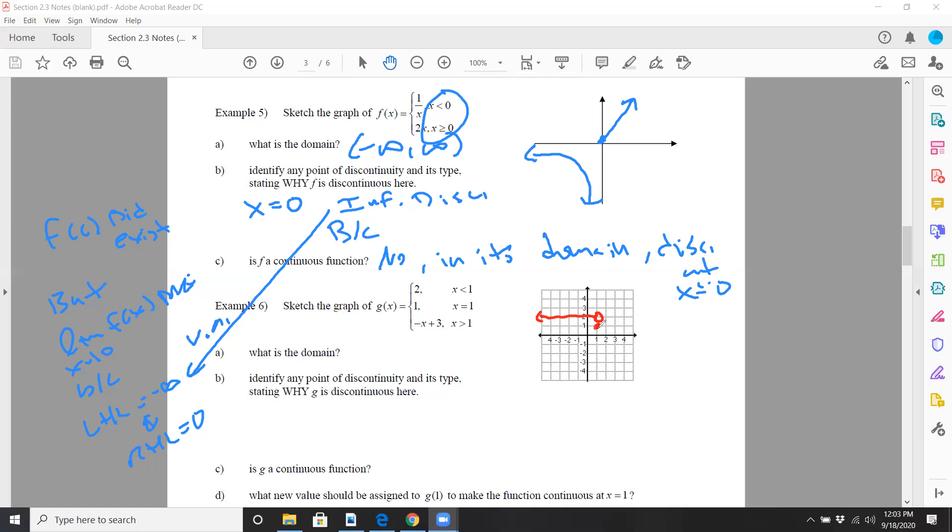X equals one at one, so you have a dot right there. And negative x plus three when x is greater than one, so by putting in one it's going to be two, slope of negative one, so it looks like that. It's non-inclusive and of course you're crossing the x axis at three. Domain's all real numbers again. There are no x values excluded.